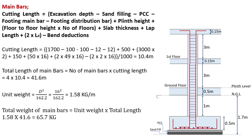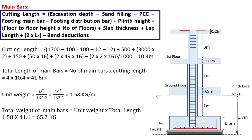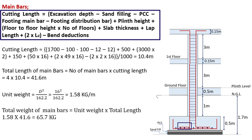Let's start with the calculation of main bars. The cutting length of main bars will be equal to excavation depth, minus sand filling, minus PCC, minus footing main bar, minus footing distribution bar, plus plinth height, plus floor to floor height multiplied by number of floors, plus slab thickness, plus lap length, plus twice development length, minus bend deductions.